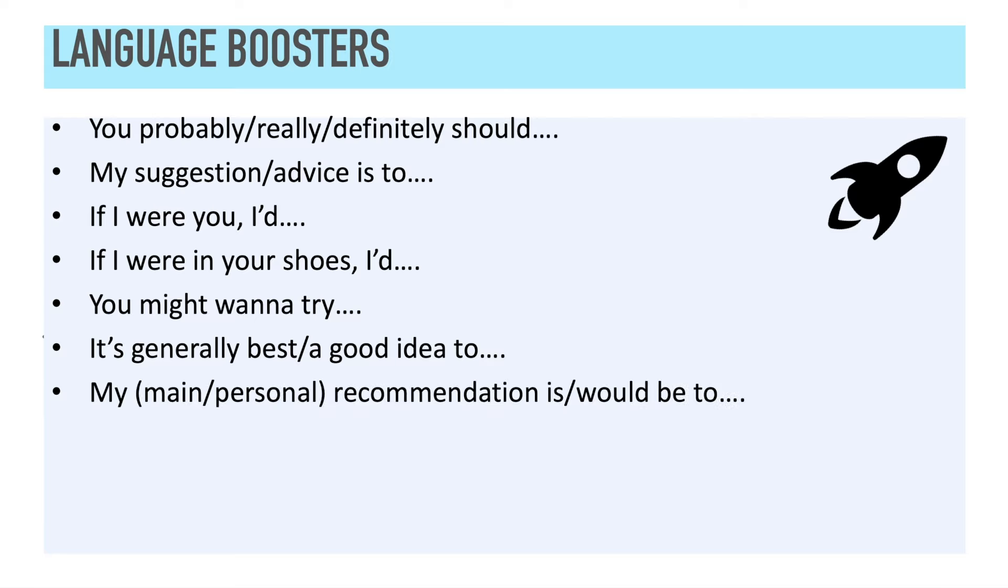The next structure is, my main or my personal recommendation is to. Or, my main or my personal recommendation would be to. And you could use it like this. My personal recommendation is to speak with your friend. The next structure is, in this kind of situation, I would recommend or I would advise. For example, you could say, in this kind of situation, I would recommend you speak with your friend.